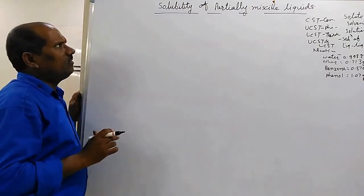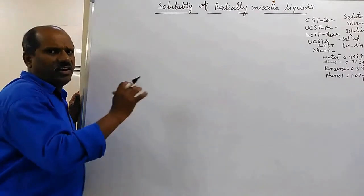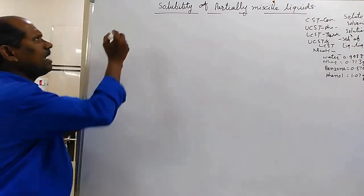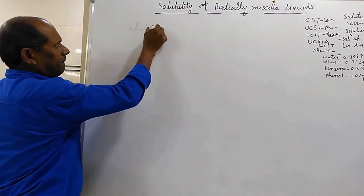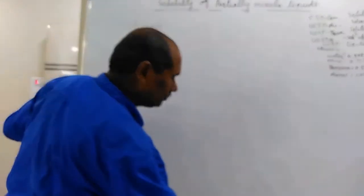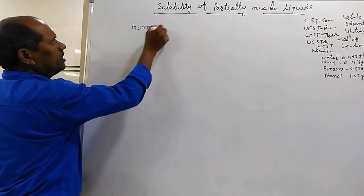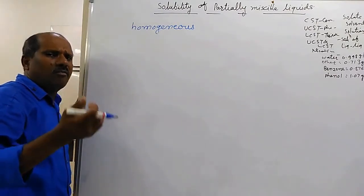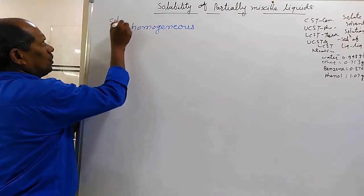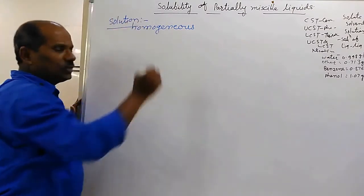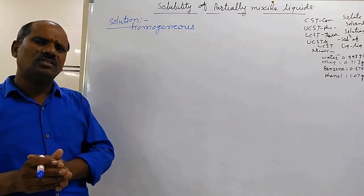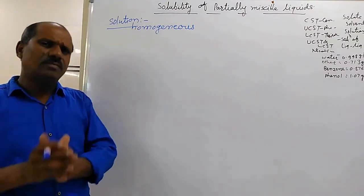Now I am explaining the solubility of partially miscible liquids in detail for further understanding. First of all, you should know what is meant by solution. A solution is a homogeneous mixture of two or more than two substances on the molecular level. That mixture of substances is called the solution.